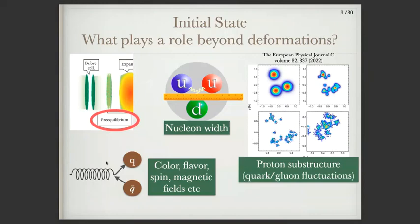There's a lot going on in our initial state — it's not just an energy density profile. We can have out-of-equilibrium effects, and in fact there are people in the audience who work quite extensively on this. You get a pre-equilibrium phase, so you don't just get an energy density profile but you get initial flow — you could get shear and bulk pressure out of this. There are also effects from the nucleon width, substructure fluctuations from quarks and gluons, and other effects such as color, flavor, spin, or magnetic fields. So there are a number of uncertainties in our initial state that could affect not just deformed systems, but other effects that could play a role.